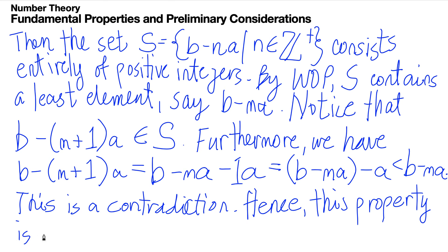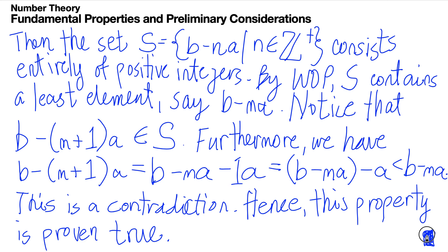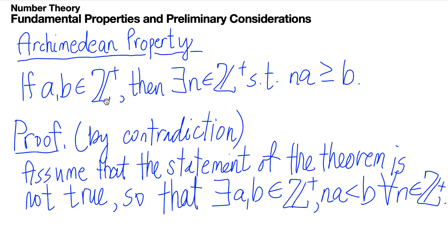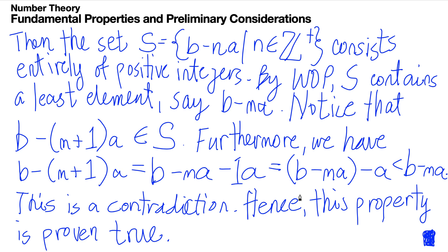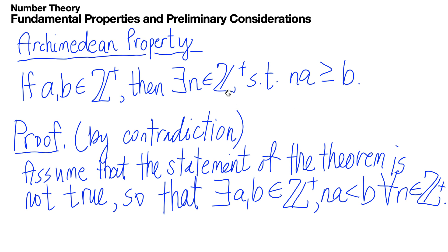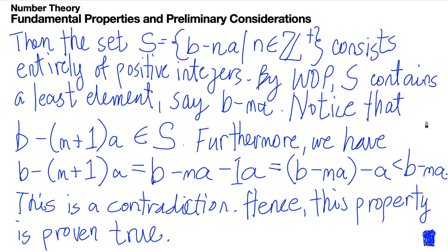That ends our proof for the Archimedean principle. We assumed the negation of the statement was true, then proved the negation is false — indirectly telling us that the original statement, the Archimedean property, holds. I'll be making more videos after this, so kindly like and subscribe to my channel. Hope to see you soon.